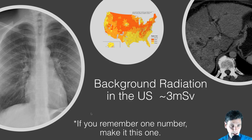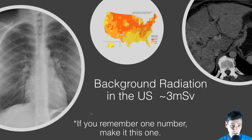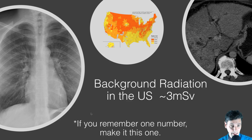If there's one number to take away, it's that if you add up all those background radiation sources, on average in the US it's about 3 millisieverts per year. That number will be used frequently when we compare the radiation dose for standard exams to background radiation. If you live in Colorado or New Mexico it might be higher — about 4 or 4.5 millisieverts — but on average, 3 millisieverts is the number for the US.